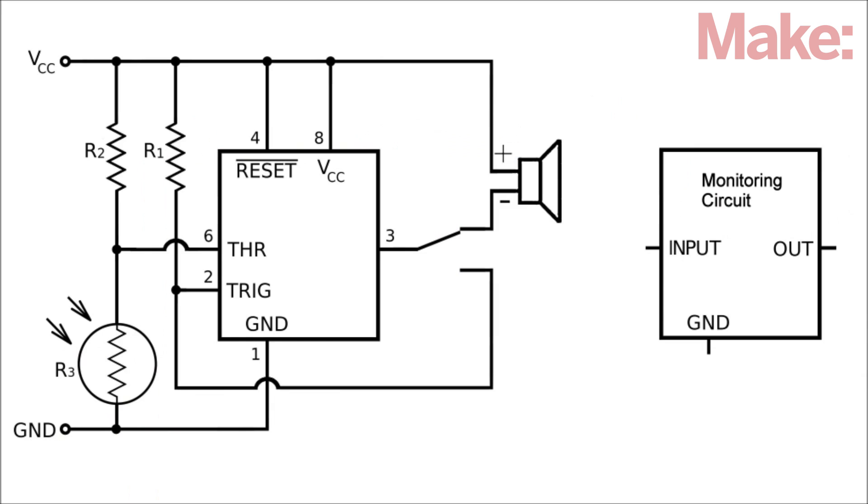To connect your laser tripwire to another circuit, connect the grounds of both circuits together. Then connect the wire that was attached to the negative terminal of the buzzer to the signal input of the second circuit.